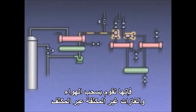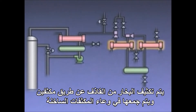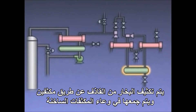The steam jets draw air and other non-condensable gases from the condenser. The steam from the jets is condensed in these two condensers and collected in a condensate hot well, while the air and non-condensable gases leave the system through a vent line.